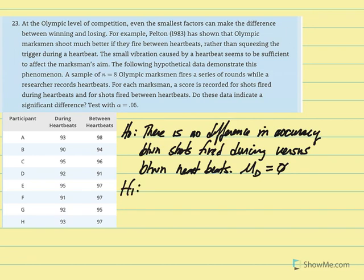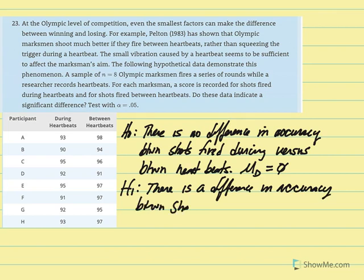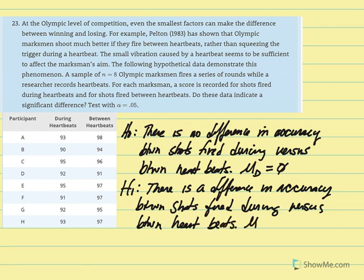The alternative or research hypothesis would state there is a difference in accuracy between shots fired during versus between heartbeats. And the notation would read that mu difference is not equal to zero.